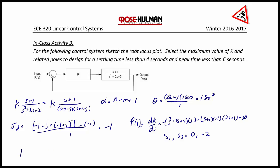We solve for the gain k = -D(s)/N(s) when s = -2 and get k = 2. We also know that k at s = 0 is 0, so this gives us enough information to create a preliminary sketch of the root locus.